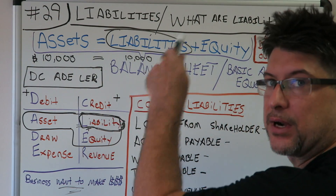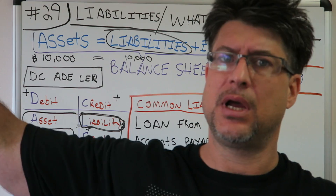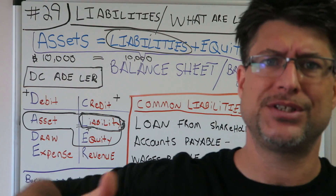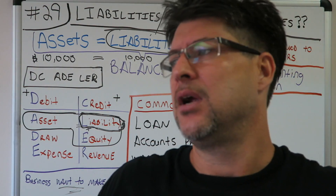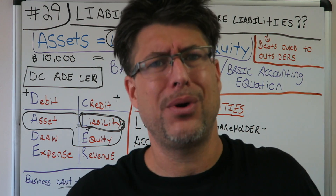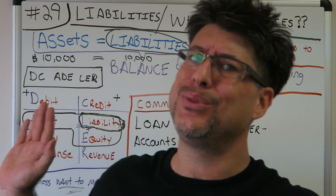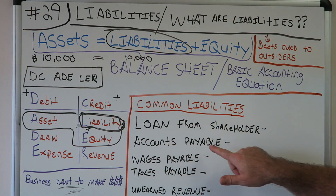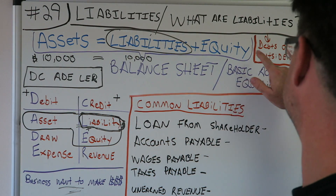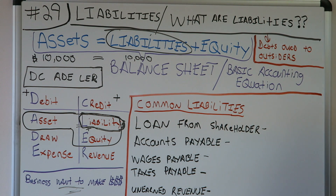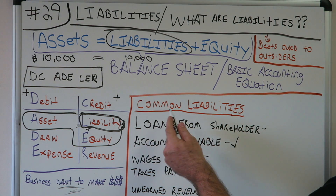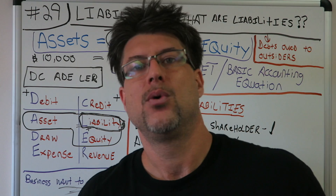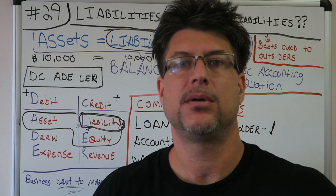On the DC Adler, liabilities have a positive credit balance. Accounts payable — I got a bunch of widgets and I haven't sold them yet, so I say I'll pay you later. Accounts payable — I got a bunch of widgets and I haven't paid for them yet. Is it a debt owed to outsiders? Yes it is.